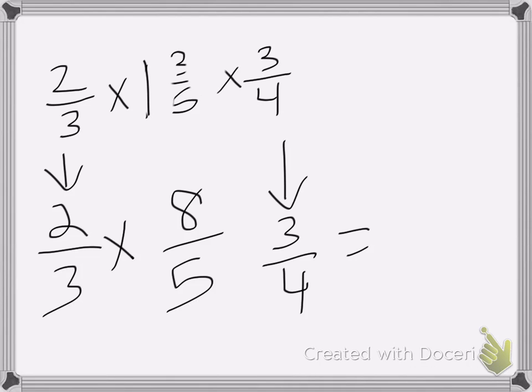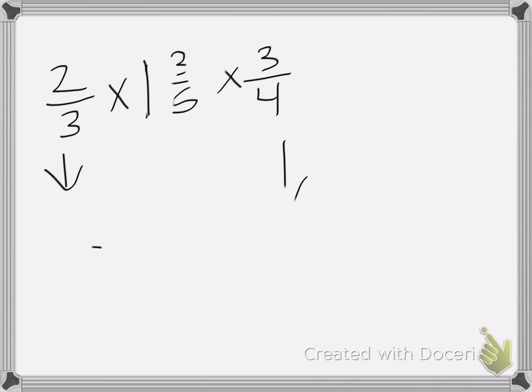So here we have our problem. We have 2 thirds times 1 and 3 fifths times 3 fourths. So I'm going to need to change these into the correct form. 2 thirds stays the same. I need to change 1 and 3 fifths to an improper fraction. So I'm going to do the shortcut.